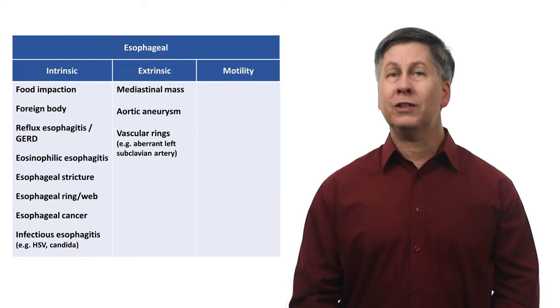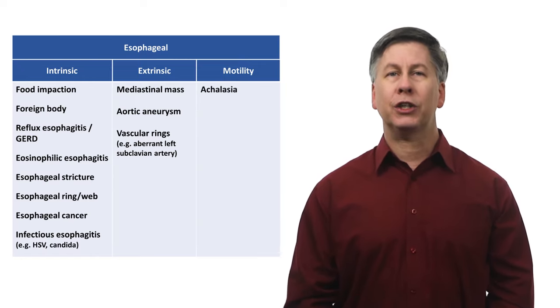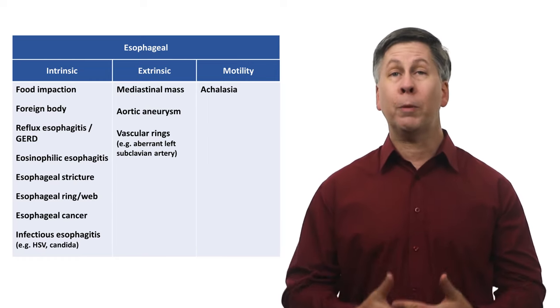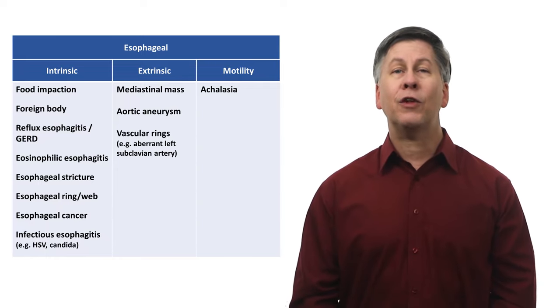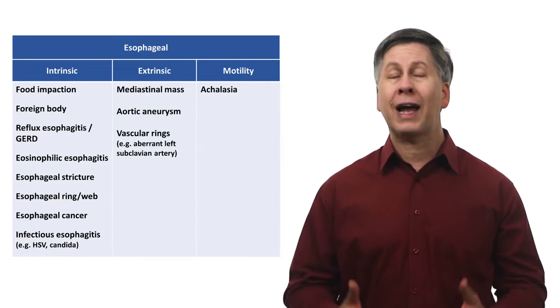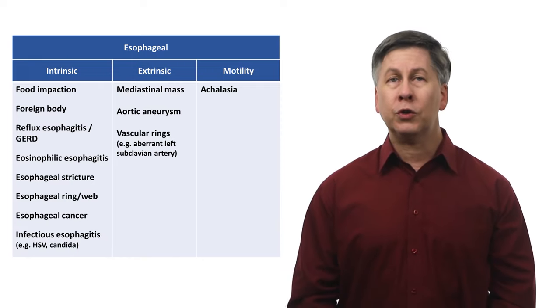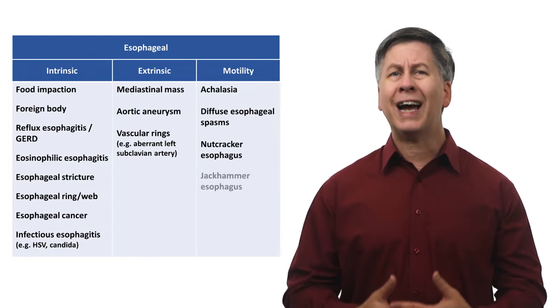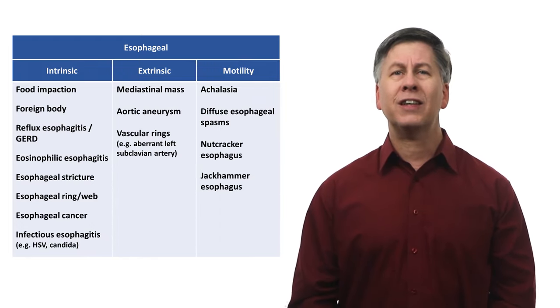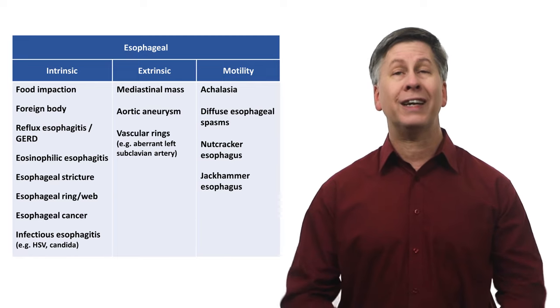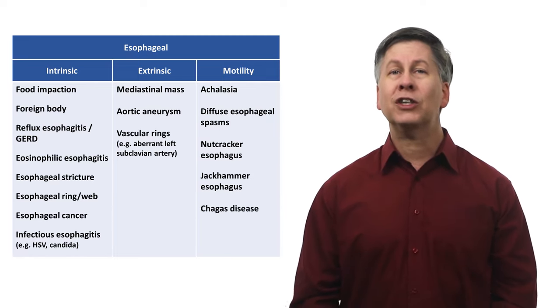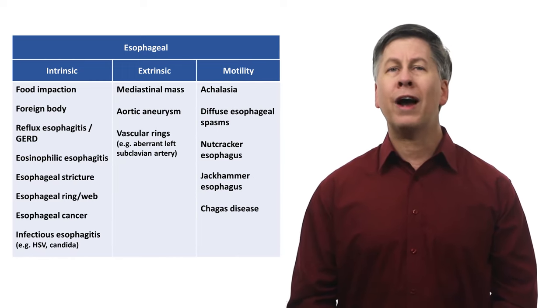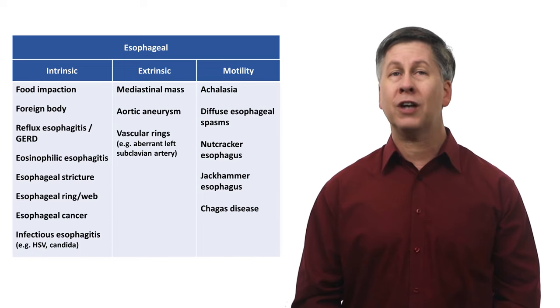Within the last category for motility, the most well-known disorder here is achalasia. This is a condition of unknown pathogenesis in which there is a loss of normal peristalsis in the distal esophagus and the lower esophageal sphincter fails to relax after swallowing. Other motility disorders include diffuse esophageal spasms and something called nutcracker or jackhammer esophagus. These are similar diseases in which esophageal contractions are excessive. Chagas disease is an infectious disease caused by a parasite found in Central and South America. It causes a wide variety of complications including pathologies of the esophagus.